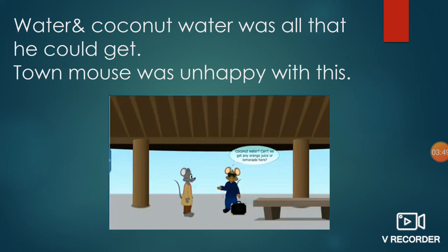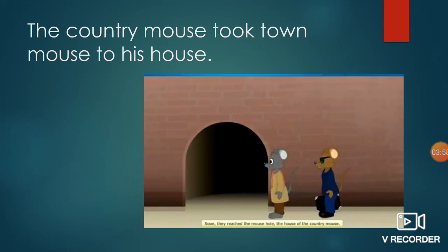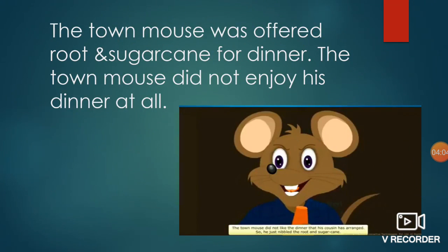He requested the country mouse for something to drink. Water and coconut water was all that he could get, and the town mouse was unhappy with this. The country mouse took the town mouse to his house. The town mouse was offered root and sugarcane for dinner, but he did not enjoy his dinner at all. He wanted cooked food to eat.